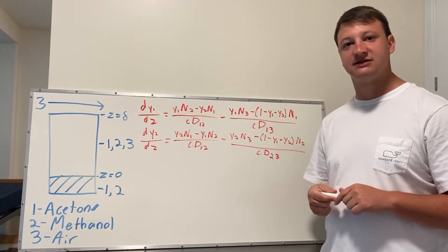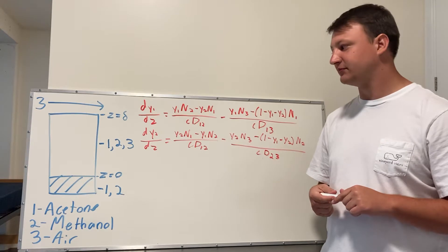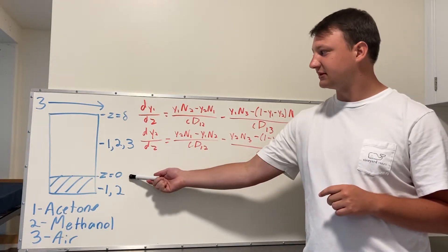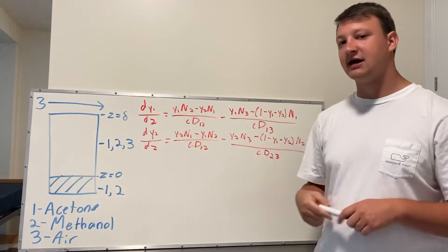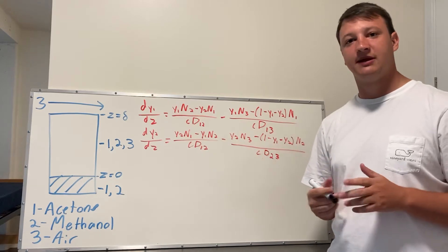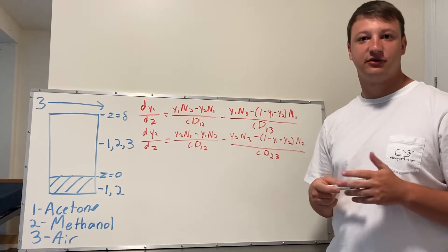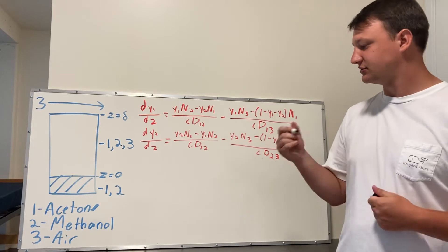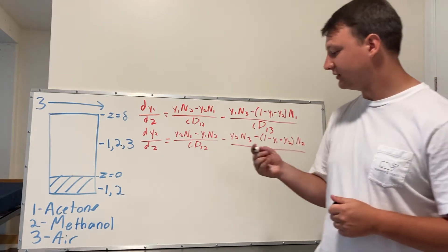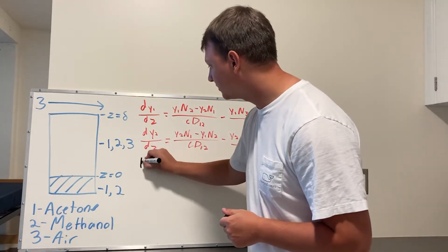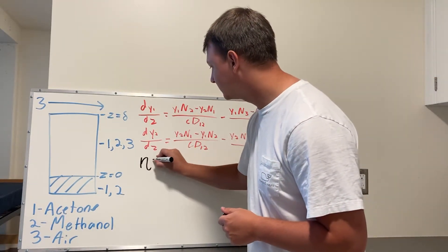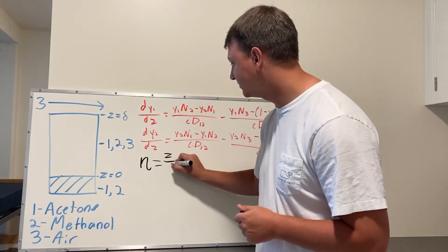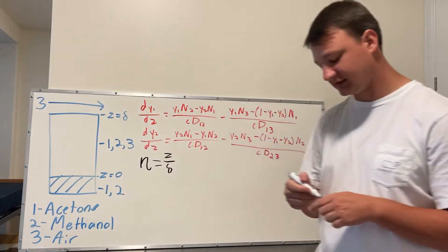To start off, we're going to be looking at the scaling of this problem. We have our position zero at the interface and delta at the top, but we're going to make that go from zero to one. To do this, we're going to use a new variable called eta, which is the z-position over the total length delta.